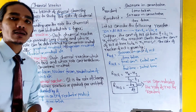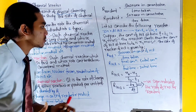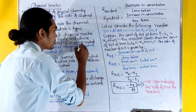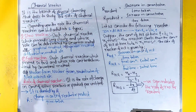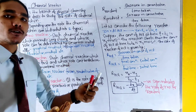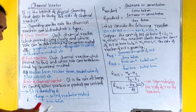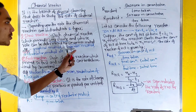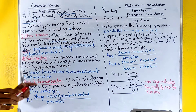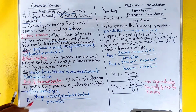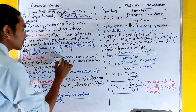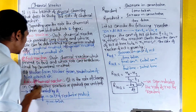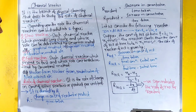Fast reactions are those chemical reactions which proceed very fast, and their rate cannot be determined by the conventional method. Methods such as integration, differentiation, and graphical representation are used for slow reactions. For fast reactions, such as nuclear fusion or neutralization of NaOH with HCl, conventional methods cannot be used.